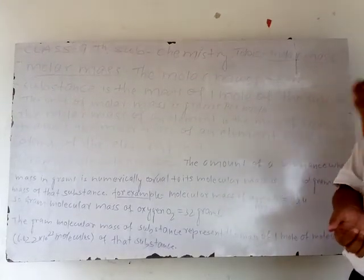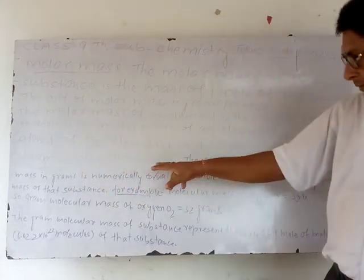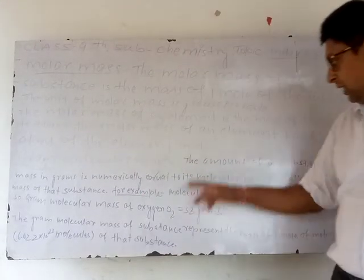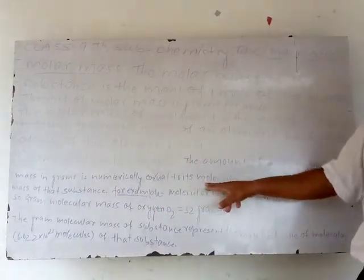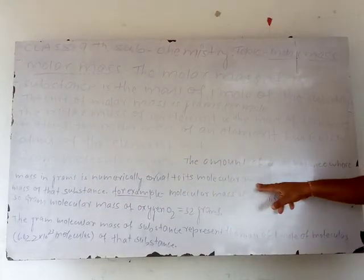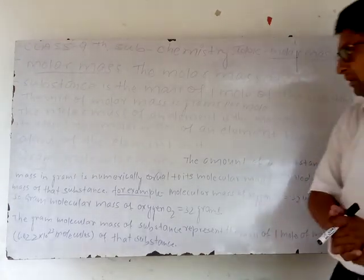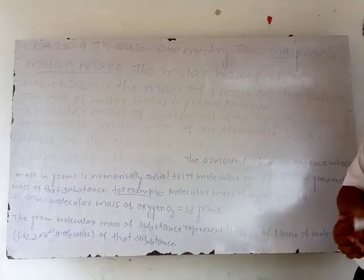Next point: Gram molecular mass. What is gram molecular mass? The amount of substance whose mass in grams is numerically equal to its molecular mass is called gram molecular mass.